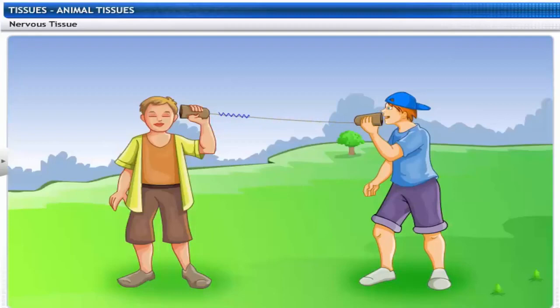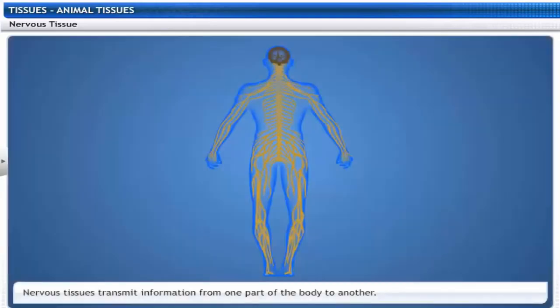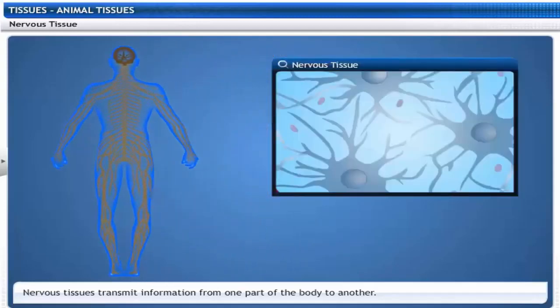Do you know what these boys are doing? They are trying to converse over a telephone that they have made. The function of the wire is to transmit information. Similarly, our body also has tissues that transport information from one part of the body to another. These are called nerve tissues.